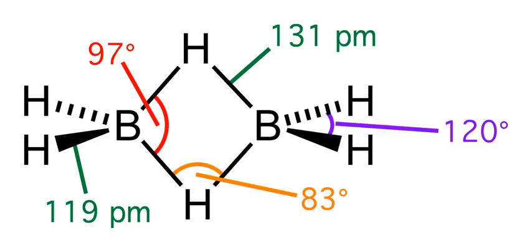The structure is isoelectronic with C2H6 2+, which would arise from the diprotonation of the planar molecule ethene. Diborane is one of many compounds with such unusual bonding.